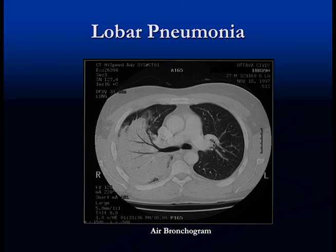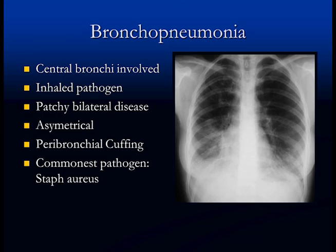When lobar pneumonias resolve, they clear completely because most of the reaction is fluid in the air spaces. Here's another example — consolidation in the left lower lobe. On the lateral view going down, it gets white at the bottom and we've lost the left hemidiaphragm centrally — this is a left lower lobe pneumonia. Another characteristic of lobar pneumonia is the air bronchogram. On CT scan we can see a large predominantly unilateral area of consolidation, solid lung, no volume loss, and an air bronchogram. This is a lobar pneumonia.